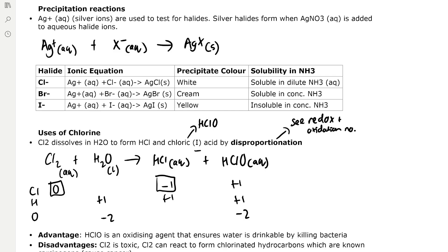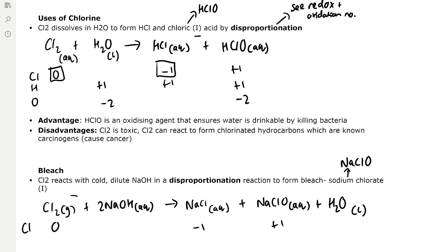For Cl minus we form a white precipitate, for bromide a cream precipitate, and for iodide a yellow precipitate. To differentiate between these precipitates, which can be difficult to tell apart, we use different concentrations of ammonia. Silver chloride is soluble in dilute ammonia, silver bromide is soluble in concentrated ammonia, and silver iodide is insoluble in concentrated ammonia.